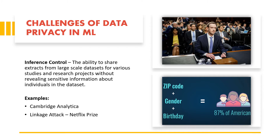There are several examples of a lack of inference control in AI. The infamous Cambridge Analytica case involved a professor who collected more information from Facebook users than they originally consented to, and he then sold that data to a company that specialized in consulting for large election campaigns. In addition, there was the linkage attack, where despite Netflix's efforts to anonymize user data, researchers found individuals' entire viewing history by connecting Netflix and IMDB data together.